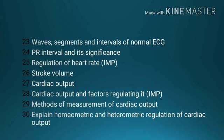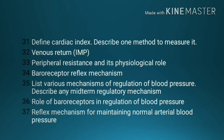Number 26, stroke volume. Number 27, cardiac output. Number 28, cardiac output and factors regulating it. Number 29, method of measurement of cardiac output. Number 30, explain homeometric and heterometric regulation of cardiac output. Number 31, define cardiac index; describe one method to measure it. Number 32, venous return. Number 33, peripheral resistance and its physiological role.